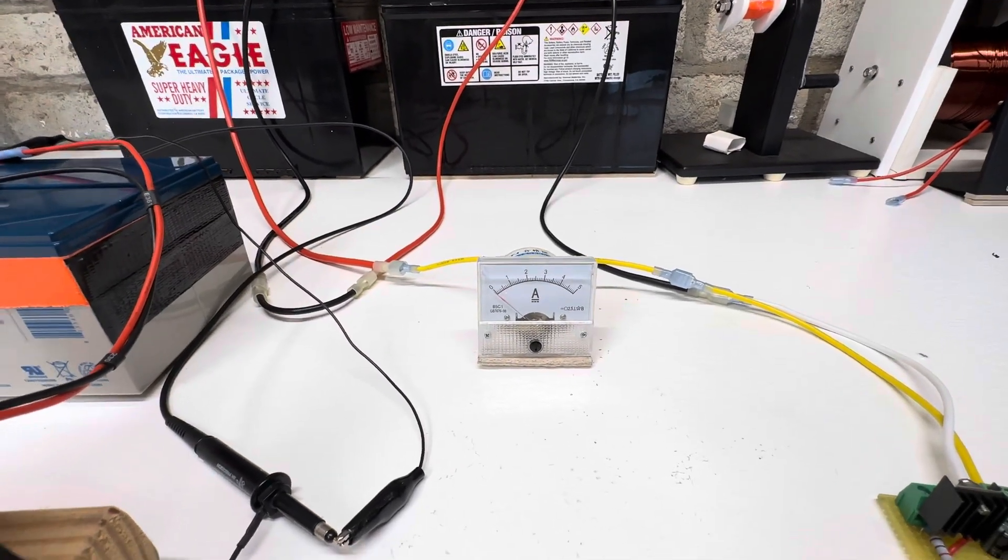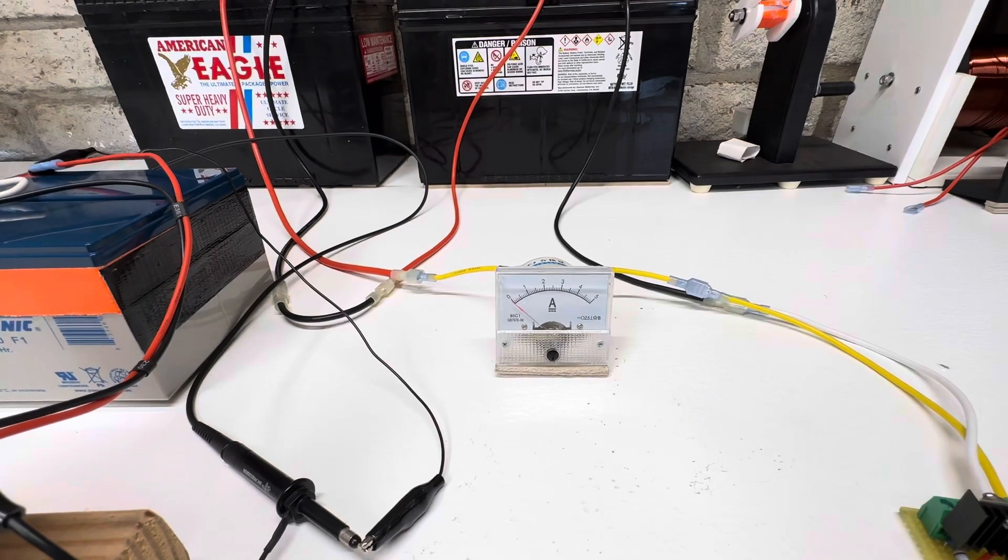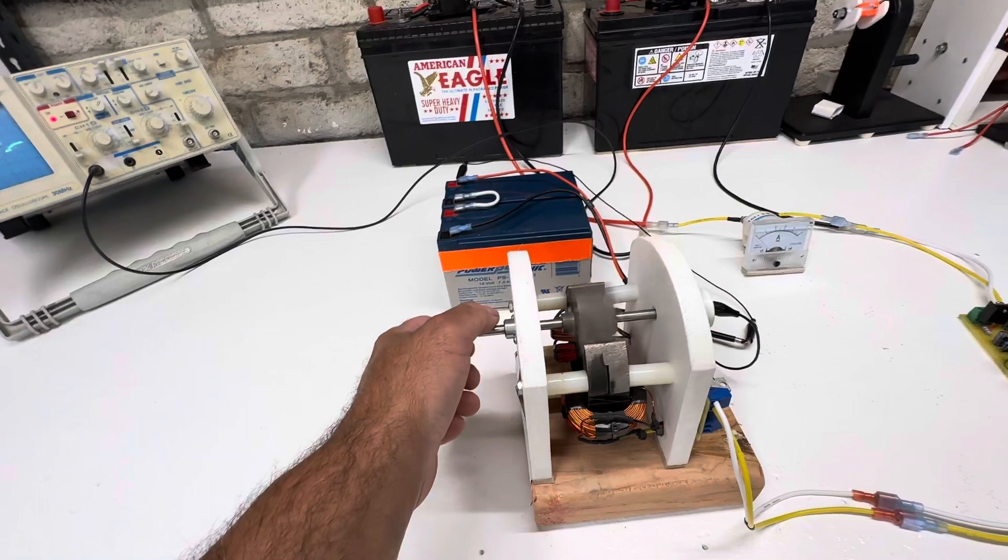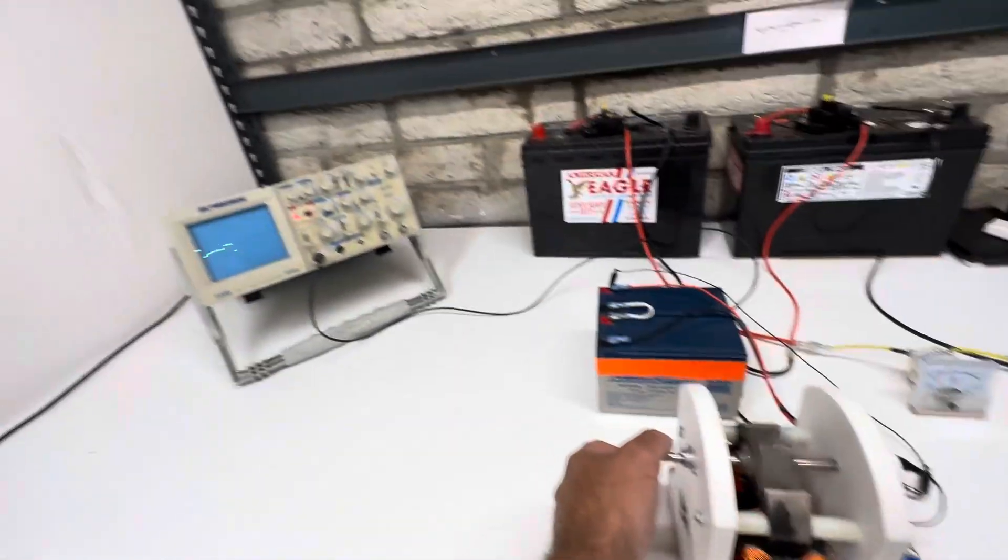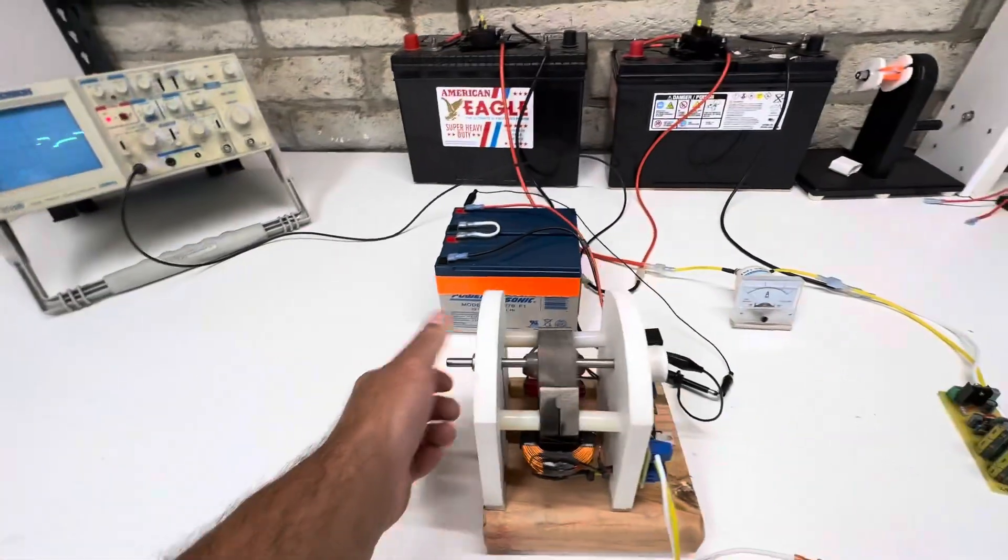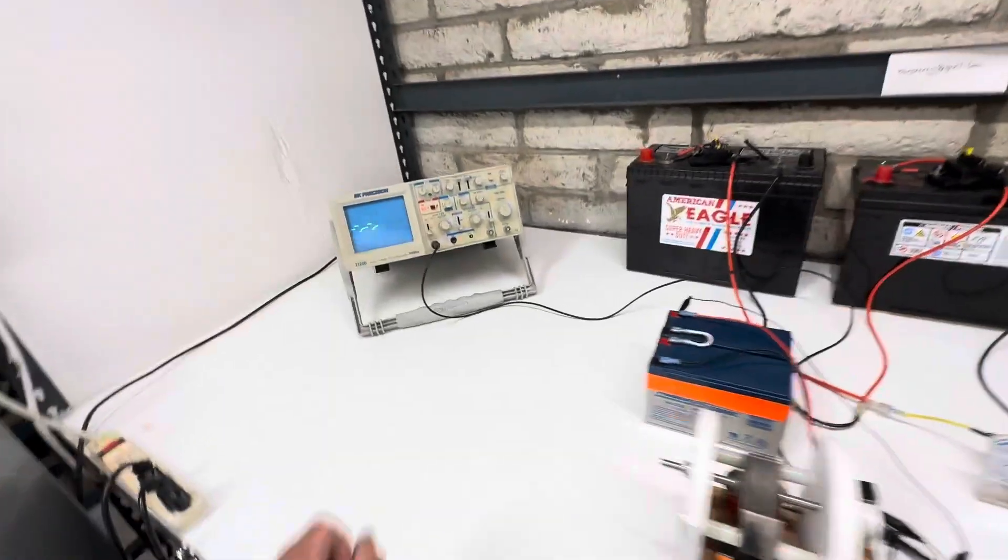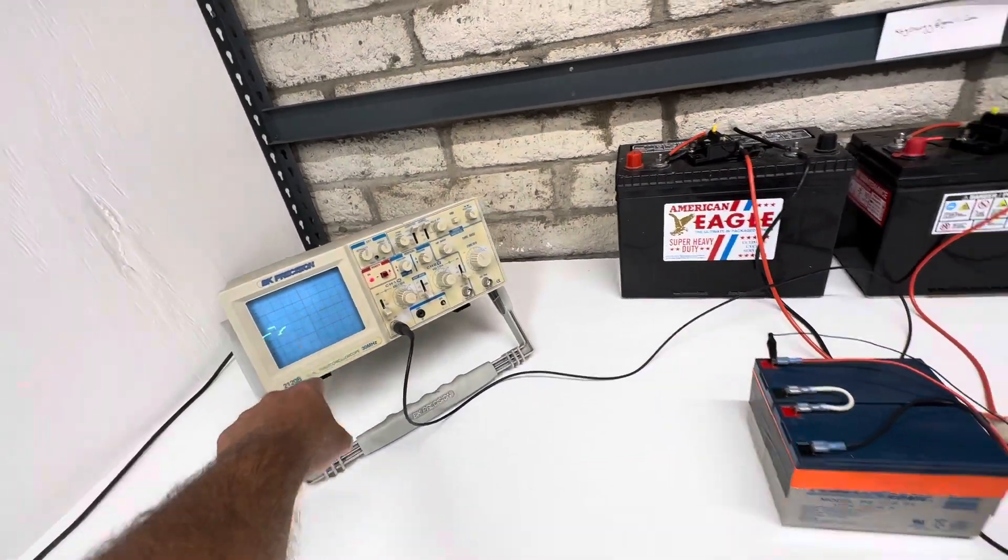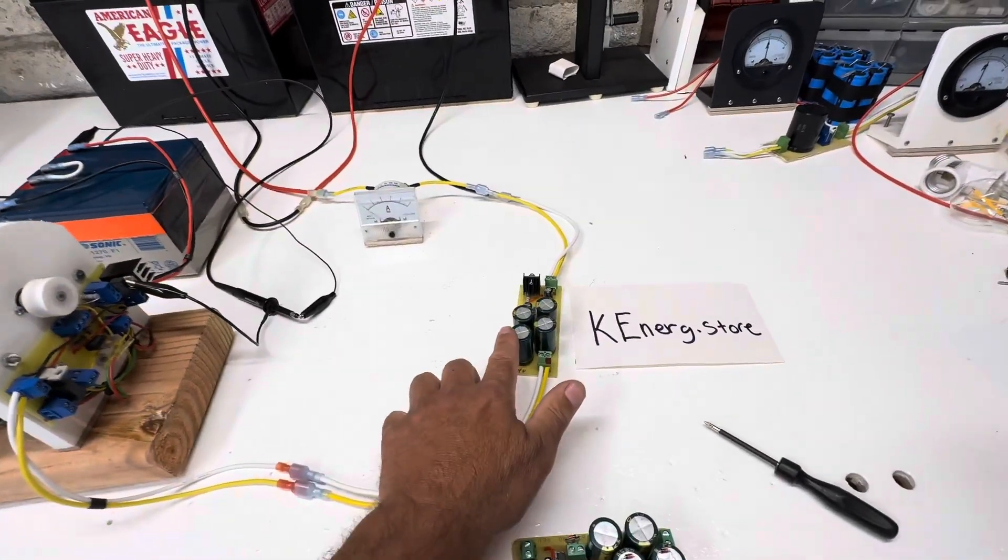But, you know, it's a pulse, so it could be a lot more than that. But we'll just say 3 amps. So, the motor is still making power. Right? But now, we've collected this energy that's usually wasted in a regular electronic circuit.